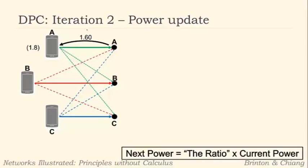So first let's calculate the ratio for each of these. For A, the ratio is going to be the desired over the measured, and the desired is 1.8 and the measured is 1.6. For B, the desired is 2.0 and the measured is 1.97, so we have 2.0 divided by 1.97. For C, the desired is 2.2 and the measured is 2.75, so it's 2.2 divided by 2.75.